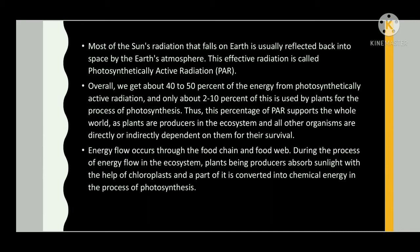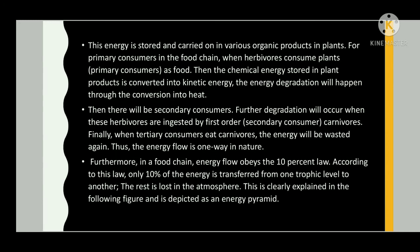Energy flow occurs through the food chain and food web. Plants, being producers, absorb sunlight with the help of chloroplasts and a part of it is converted into chemical energy through photosynthesis. This energy is stored in organic products in plants for primary consumers. When herbivores consume plants, the chemical energy stored in plant products is converted into kinetic energy, and energy degradation happens through conversion into heat. Further degradation occurs when herbivores are ingested by first-order secondary consumers (carnivores), and again when tertiary consumers eat carnivores.